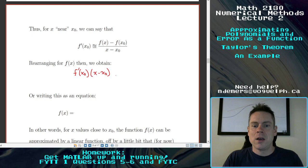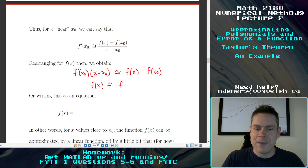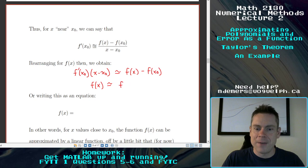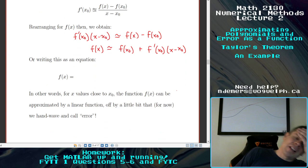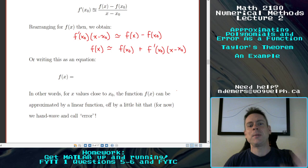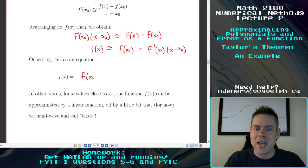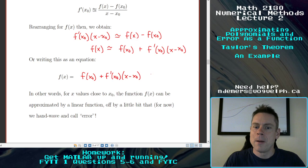I can take this approximate inequality and rearrange for f of x. If I do, I get f prime of x0 times x minus x0, and rearranging for f of x gives f of x is approximately equal to f of x0 plus f prime of x0 times x minus x0. We can turn this into an exact equality with an extra error term to soak up the difference.